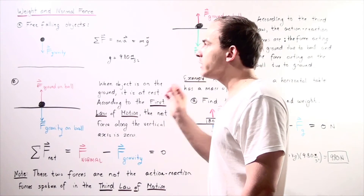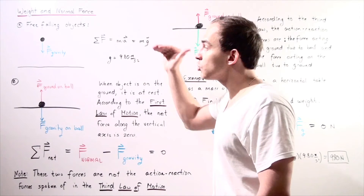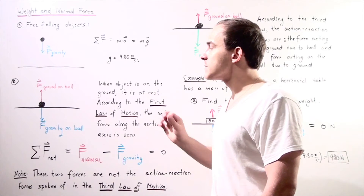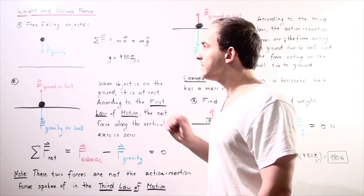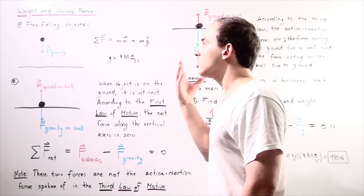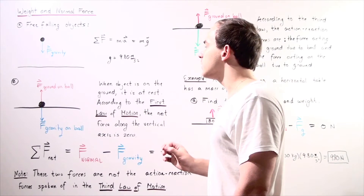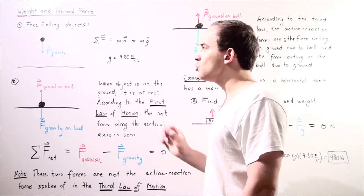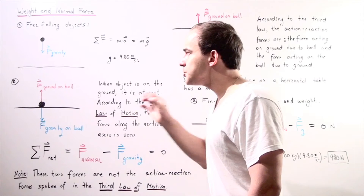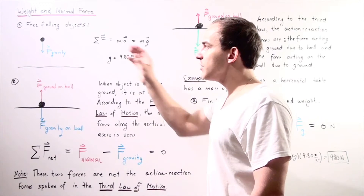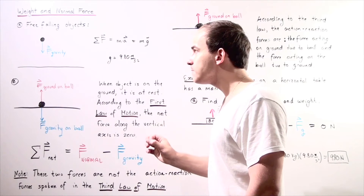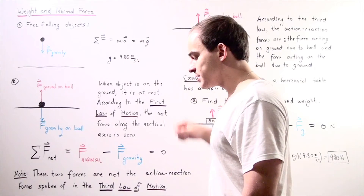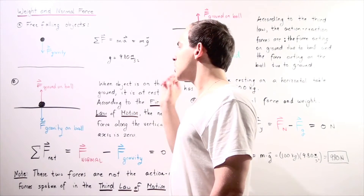Any free-falling object at or close to the surface of the earth, as long as we neglect air resistance, has a net force that can be found using the second law of motion. The net force along the y-axis equals mass times acceleration. Since the only force acting on the object is gravity, we replace acceleration with g, where g is 9.80 meters per second squared at the surface of the earth.